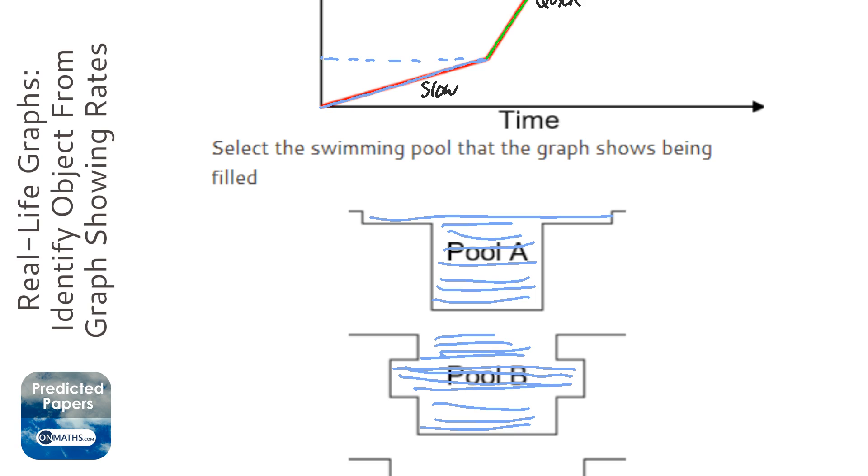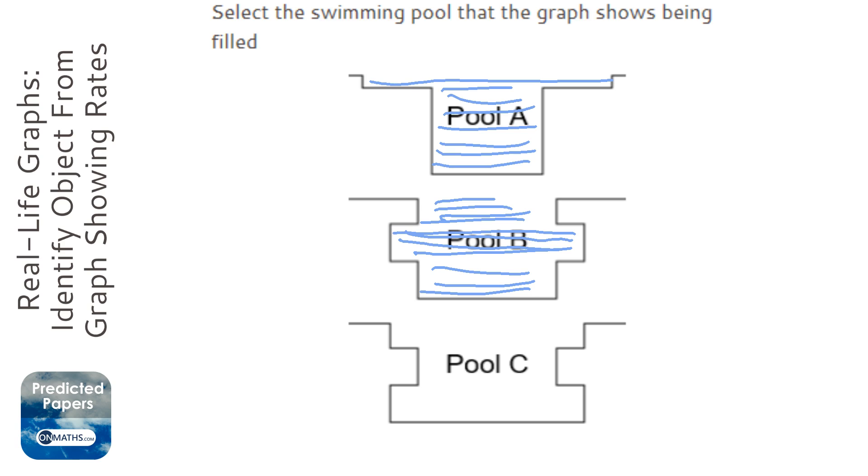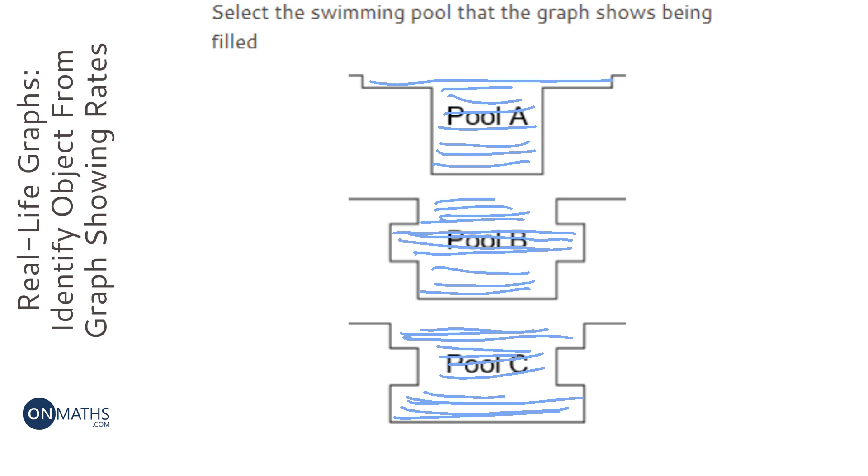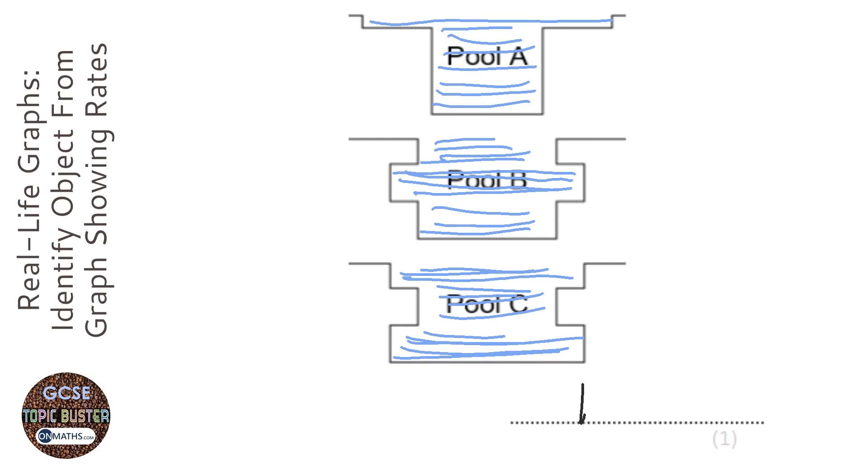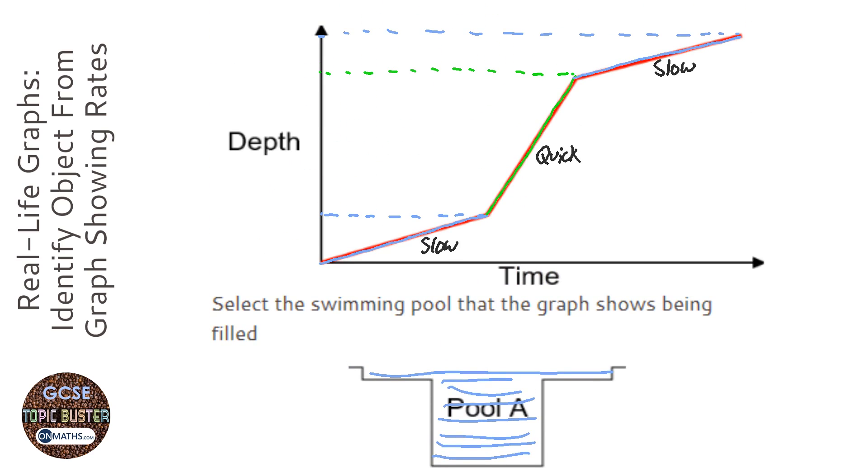Pool C, though, will start off really slowly - it's got a lot to fill - then have a quick stint in the middle, and then end really slowly. So the answer will be Pool C, which matches our graph perfectly.